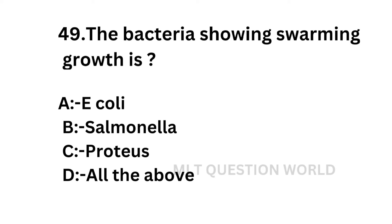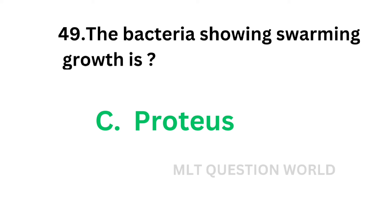Question number 49: The bacteria showing swarming growth is — option A: E. coli, option B: Salmonella, option C: Proteus, option D: All the above. This has been discussed in detail in previous videos. The correct answer is option C, Proteus. The bacteria showing swarming growth is Proteus.